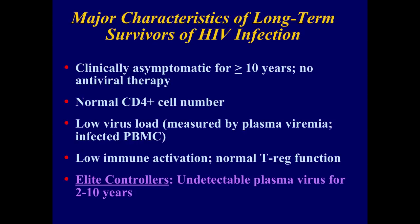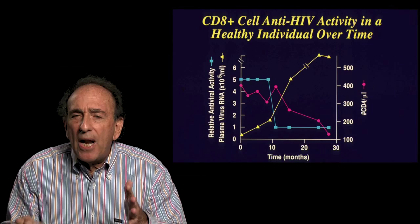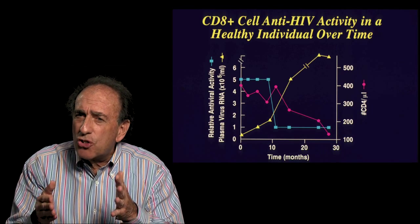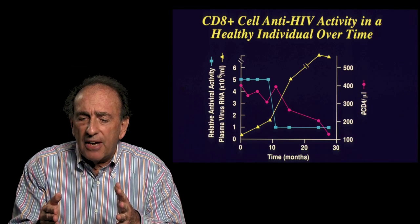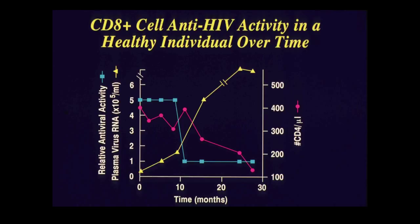Long-term survivors have normal CD4 cells, a low viral load, and don't have a lot of immune activation. Elite controllers have virus in their blood that is very low or undetectable. What happens to individuals who maintain control? Following one individual over time, the CD8 cell antiviral activity drops at around 10 months, and when it does, virus emerges and CD4 cells come down. So the question is: can we bring back that CD8 response to restore control of HIV?